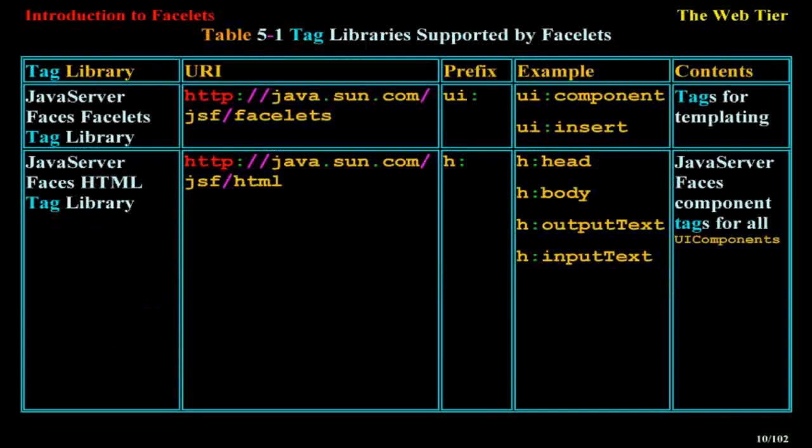Table 5-1 lists the tag libraries supported by Facelets. These include: the JavaServer Faces Facelets tag library (prefix: ui), used for templating insert tags; the JavaServer Faces HTML tag library (prefix: h), which provides component tags for all UI components such as h:head, h:body, and h:outputText; and the JavaServer Faces core tag library (prefix: f), which provides tags for custom actions independent of any particular render kit.